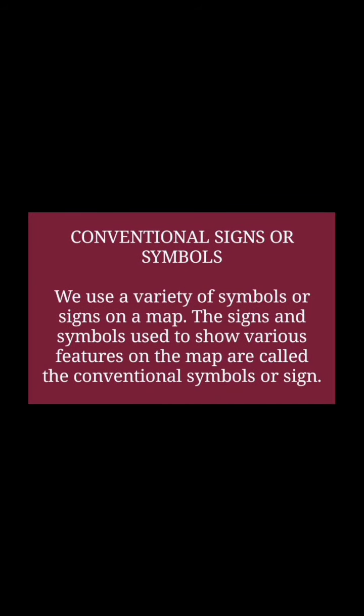The color scheme on a map: blue for water bodies, light brown for plains, dark brown for mountains, yellow for agricultural land, and green for forests and plains. Next topic is conventional signs or symbols.